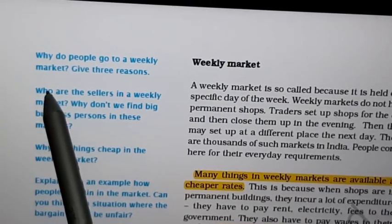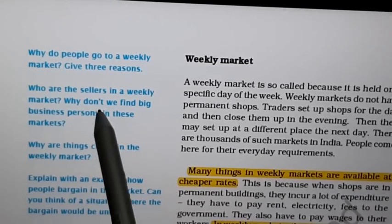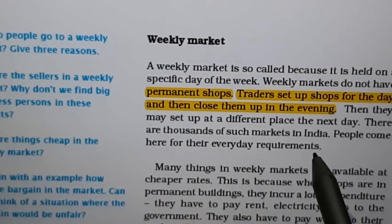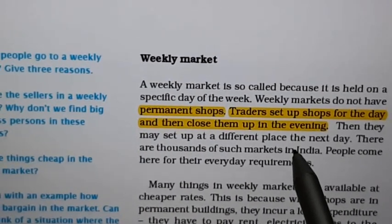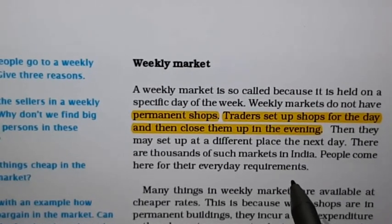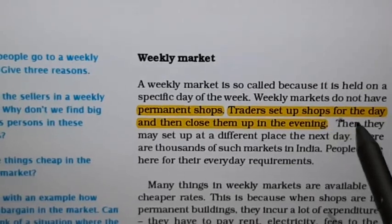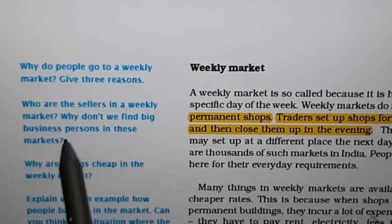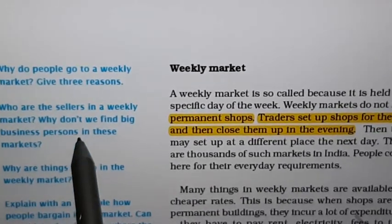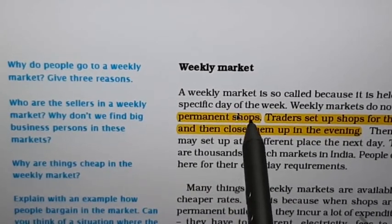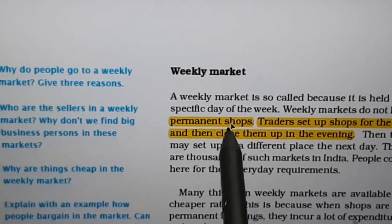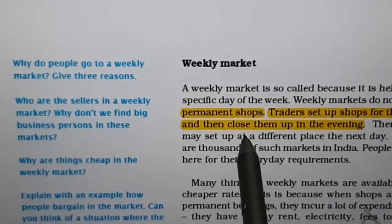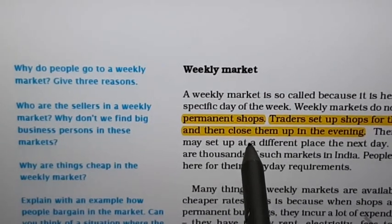Second question: who are the sellers in a weekly market? Why don't we find big business persons in these markets? In weekly markets, sellers are those traders who set up shops for the day and then close them in the evening. We do not find big business persons in weekly markets because big persons have permanent shops to sell their products and don't need to sell in weekly markets.